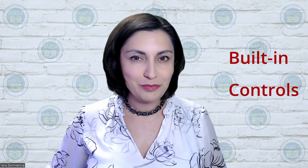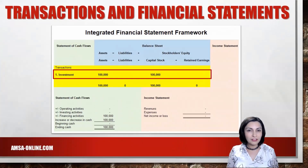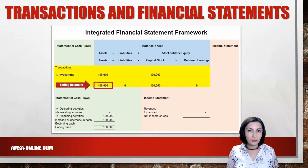Now let's make sure the accounting equation for this transaction is in balance and that the ending cash on the statement of cash flows is equal to the ending cash on the balance sheet. In this transaction, $100,000 in assets equals $100,000 in stockholders' equity. Liabilities are not affected by this transaction. Since we only have one transaction so far, there are no other assets but cash in the ending balance of assets on the balance sheet. This will change when we record more transactions. The ending cash balance on the statement of cash flows is the same as the ending cash balance on the balance sheet.